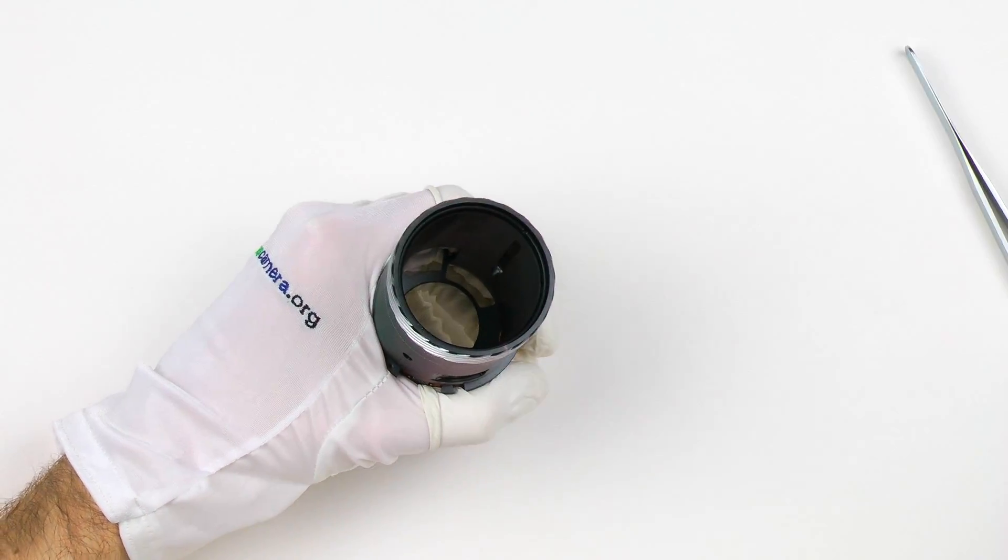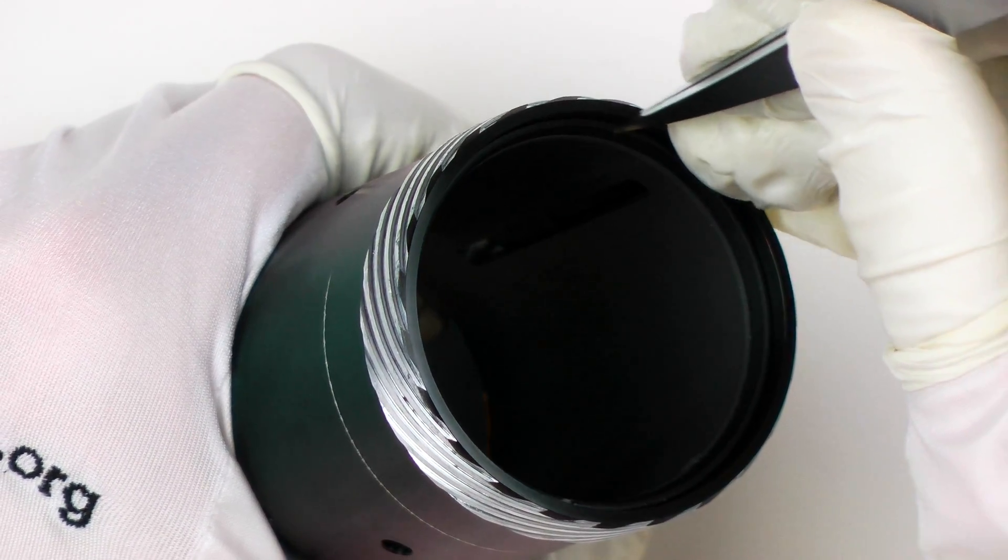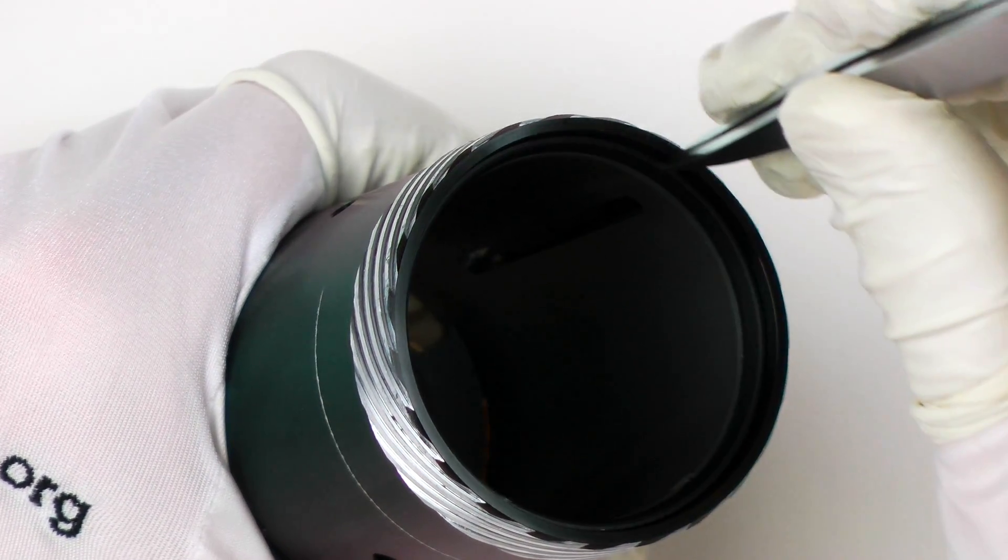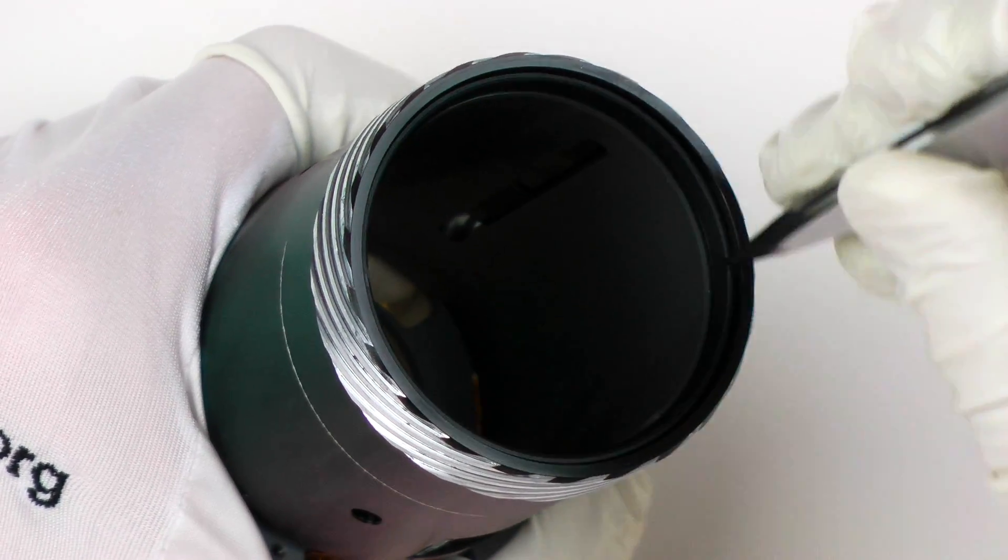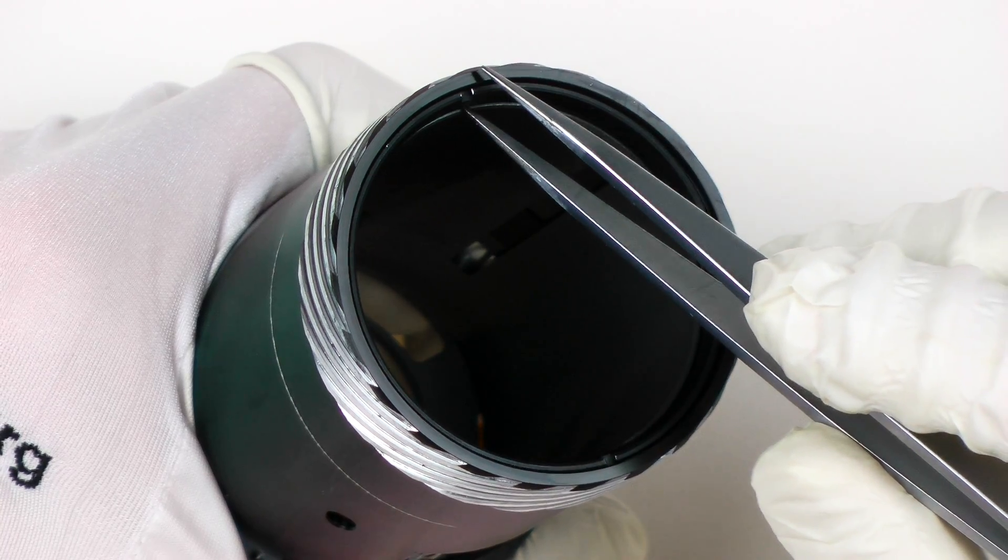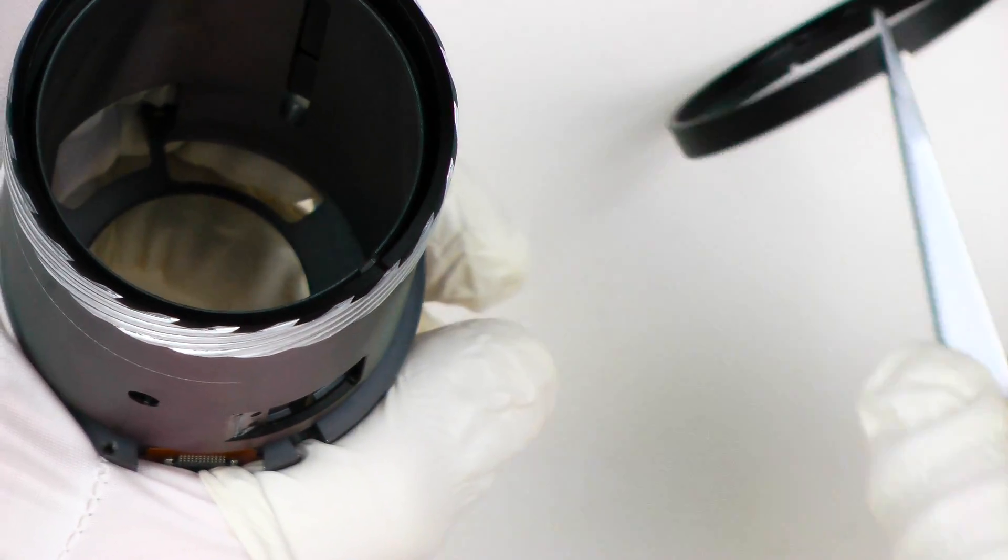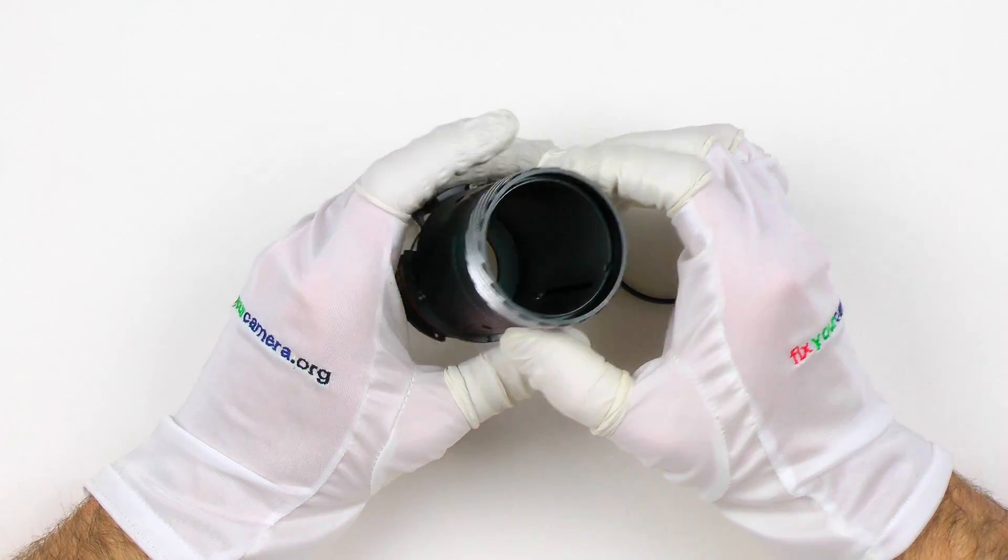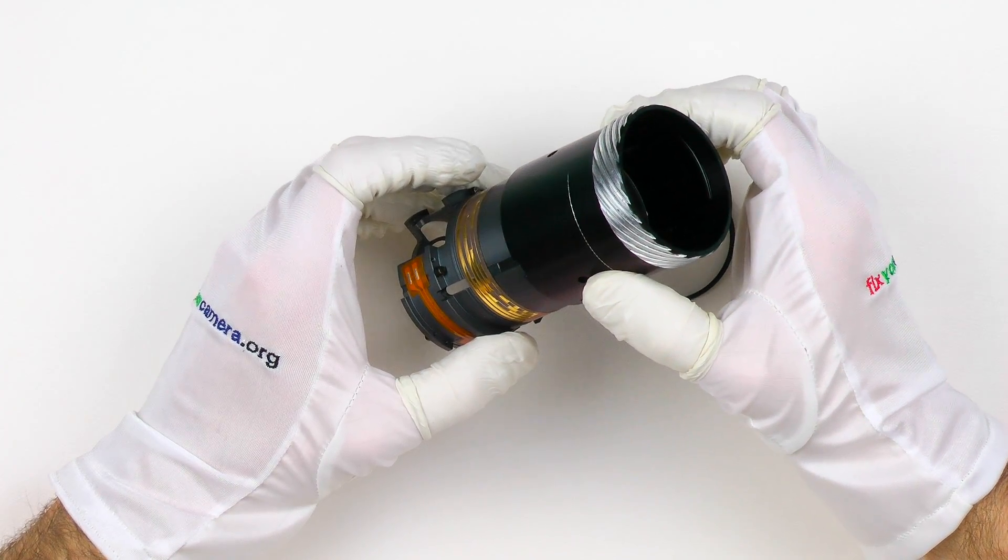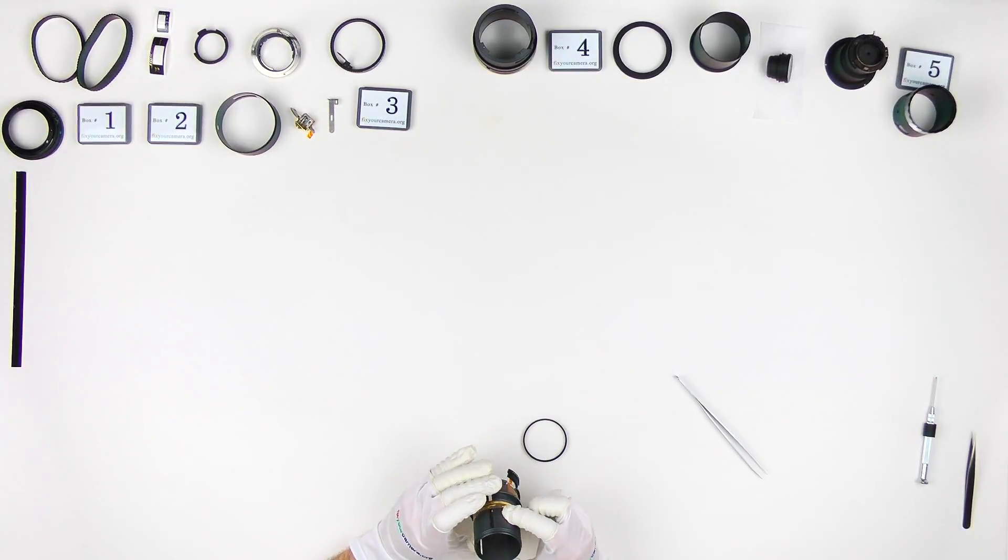One thing I want you to remember from this video, if you are going to ever attempt any lens or camera repair, is if something doesn't come off easily, it means that you are doing something wrong. Don't force anything. Because even though it looks like a metal part, it's usually a soft type of metal. Aluminum or some other alloys easy to damage. And once the damage is done, it's very hard to deal with it.